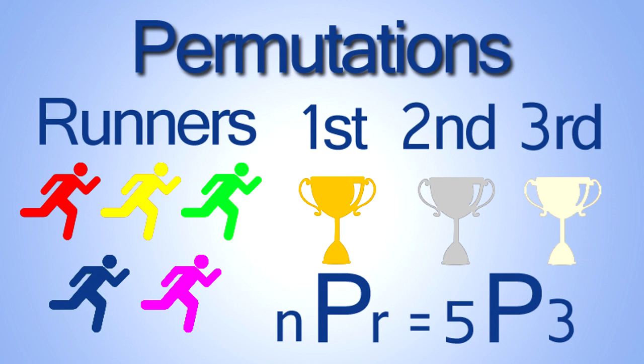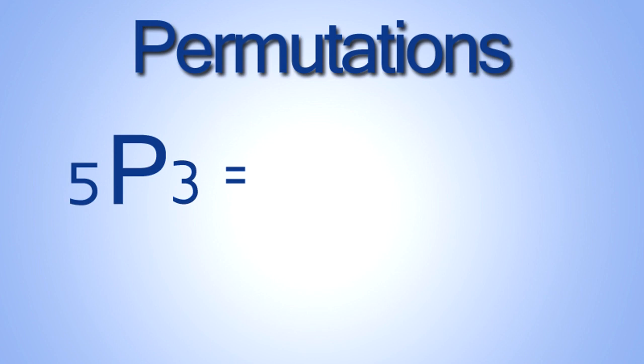n is equal to 5 because there are five total runners and r is equal to 3 because there are three winning places: first place, second place, and third place. The permutation formula is 5 factorial divided by 5 minus 3 factorial.